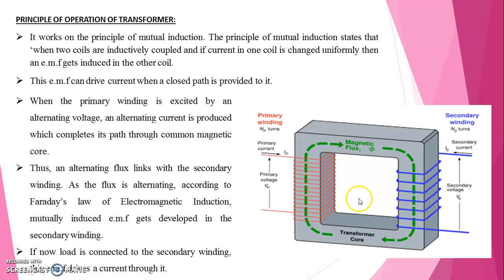This is secondary winding. As the flux is alternating, according to Faraday's law of electromagnetic induction, mutually induced EMF gets developed in the secondary winding. If now load is connected to the secondary winding, this EMF drives a current through it. If circuit closed means current flow will take place.